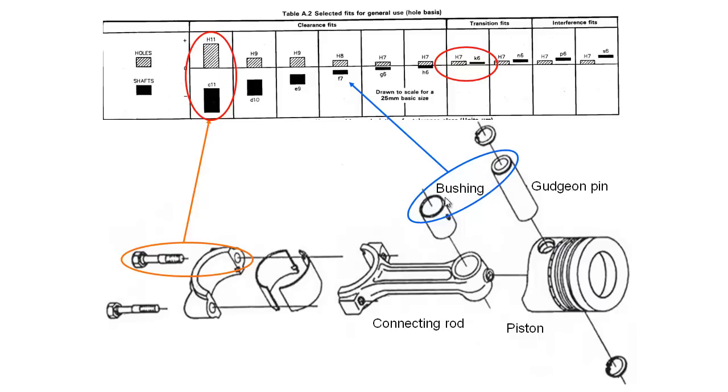If we look at an example here of the fit between this gudgeon pin and the bushing, we want this to be able to rotate freely and it's also oiled as well. So we're going for a tighter clearance fit here so that that rotation can happen quite easily. So we'd use something in this sort of range here.